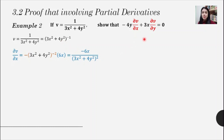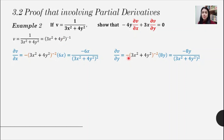For del v/del y, we repeat the same process. Again we have the bracket to the power of minus one, so we pull minus one to the front giving a negative bracket, reduce the power to minus two, and rewrite the bracket contents. Differentiating the inside with respect to y: the first term is a constant giving zero, and the second term differentiates to 8y. Simplified, this is our del v/del y.